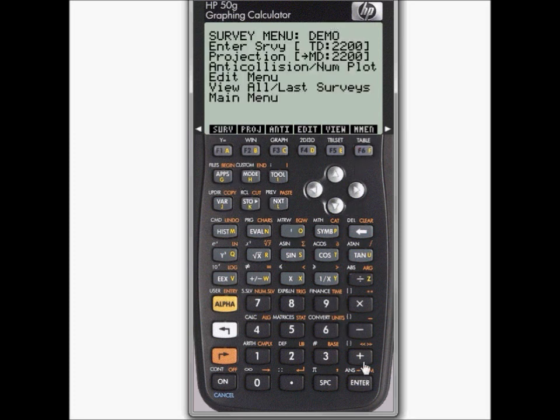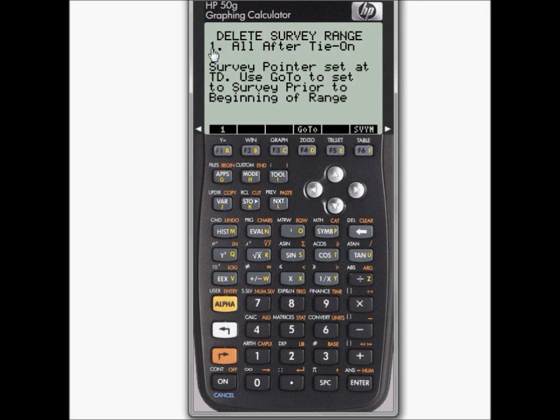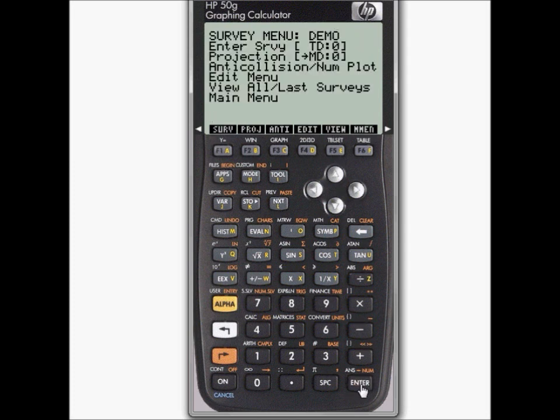But we have these surveys in it which we also don't need, so what we do is we go to edit, and we go delete range. We delete it all after the tie-on, then we say one, and we say yes, do that. And so we have demo now that starts at zero.